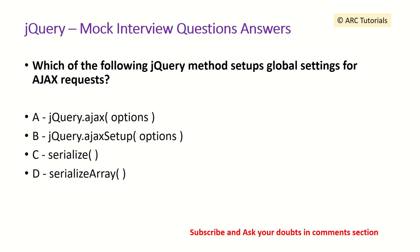So here we are trying to see which is the method which will be used to make the AJAX call. It is jQuery.ajaxSetup. So this will set up the global settings for all our AJAX requests.